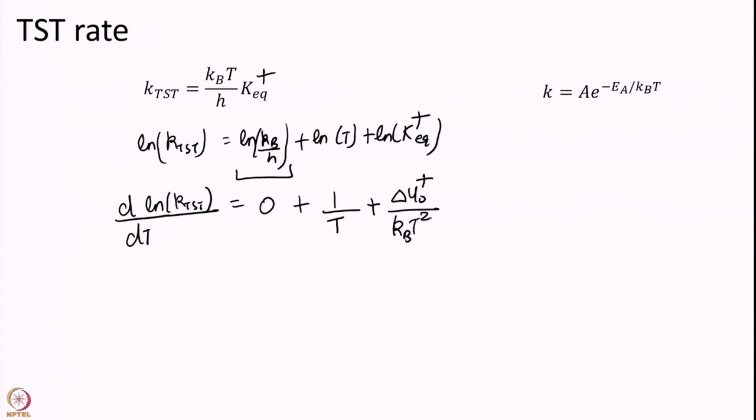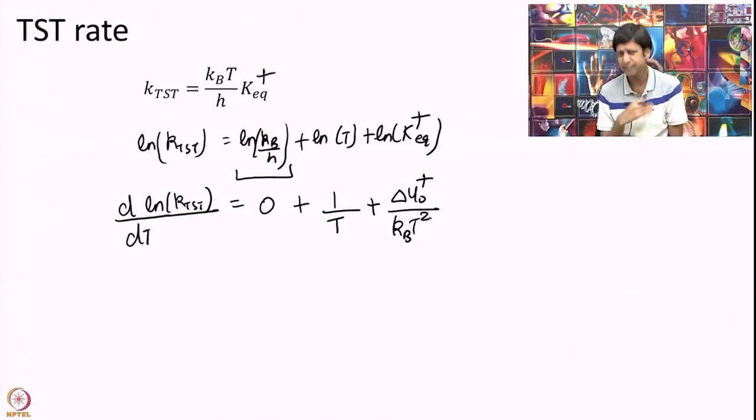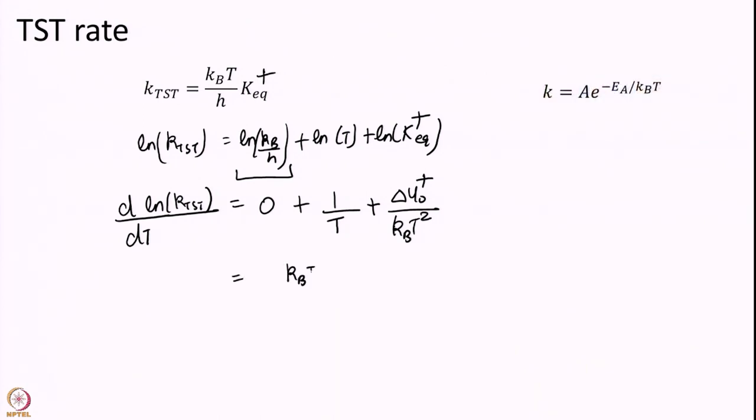As in some slides you might see R or in some slide you might see KB. They are the same thing. It is just a matter of units. I try to use KB at all places, but if you see R somewhere, do not get worried. It is not a mistake really. It is just a different dimension. So, let me just rewrite this as KT plus delta U naught over KT square.